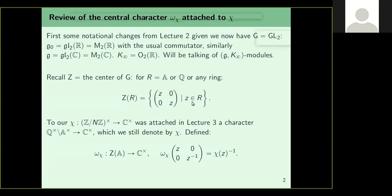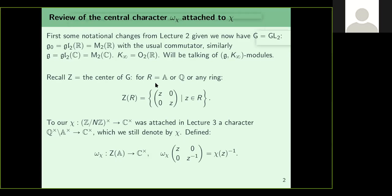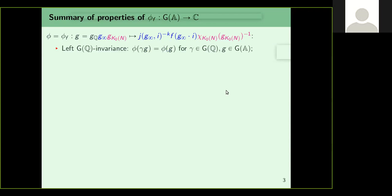There is a typo: Z(R) is the set of all z·I with z in R*. So Z(A) is isomorphic to A*. We had the character chi on A*. So chi can be thought of as a character on Z(A). We take its inverse to be ω_chi. So we define a character on the center of GL2(A) as the inverse of the character attached to chi.